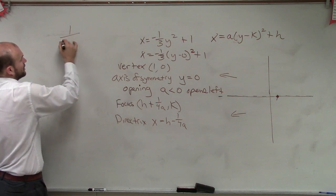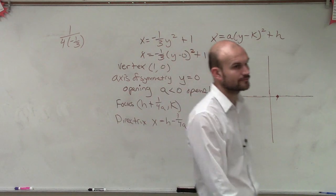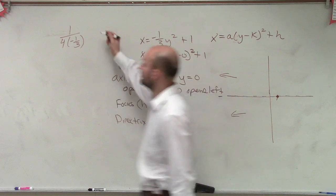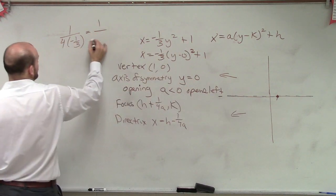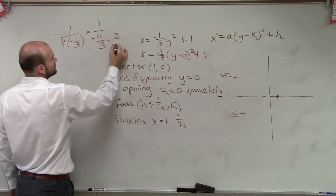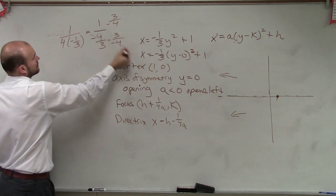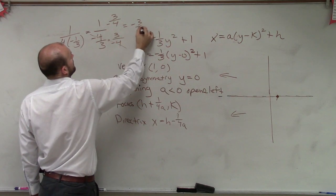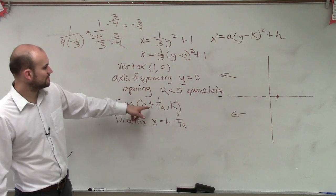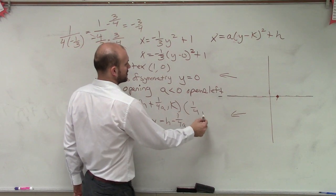So then we come into a problem. 1 over 4 times negative 1 third. So one thing that we can do, ladies and gentlemen, is, well, we can multiply this across. This is 1 over a negative 4 thirds. To get a fraction off the bottom, I can multiply it by the reciprocal. So therefore, we have a negative 3 fourths. So my focus is going to be 1 plus negative 3 fourths, which would be 1 fourth comma 0.